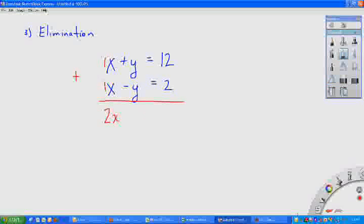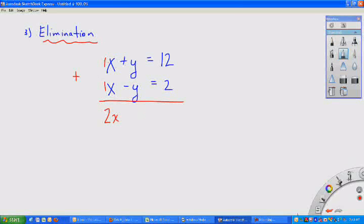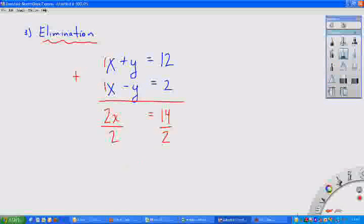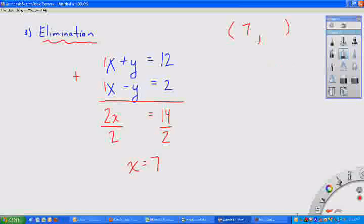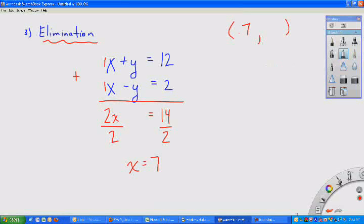When we add the top plus the bottom, we have 1x plus 1x is 2x. And we'll see here the y's, y plus a negative y, they cancel out. They got eliminated, and that's the goal, so that one of them gets eliminated. In this case, it happened to be y. So we continue adding together. We've got 12 plus 2 is 14. From here, we just solve for x. Divide by 2, and we've got x equals 7. So in our solution set, the x value is 7.